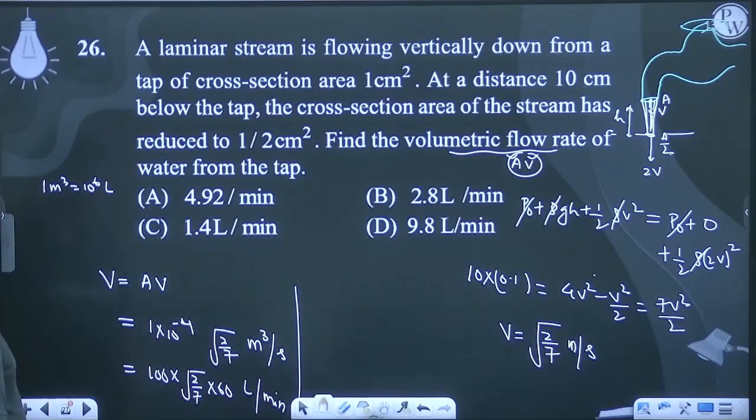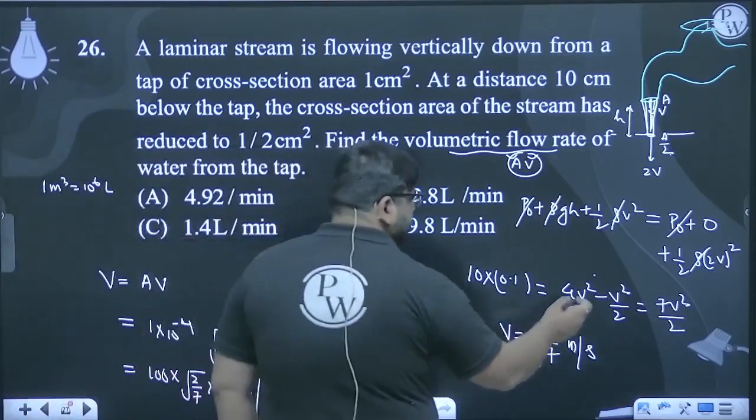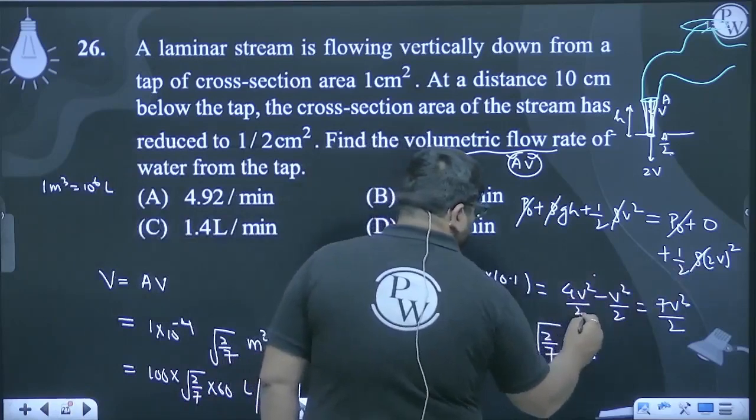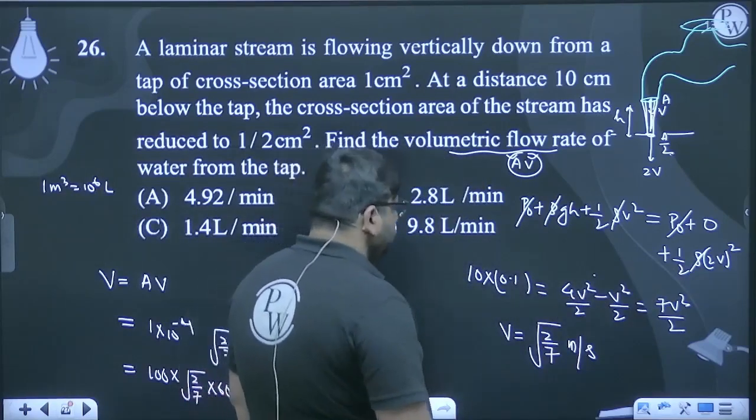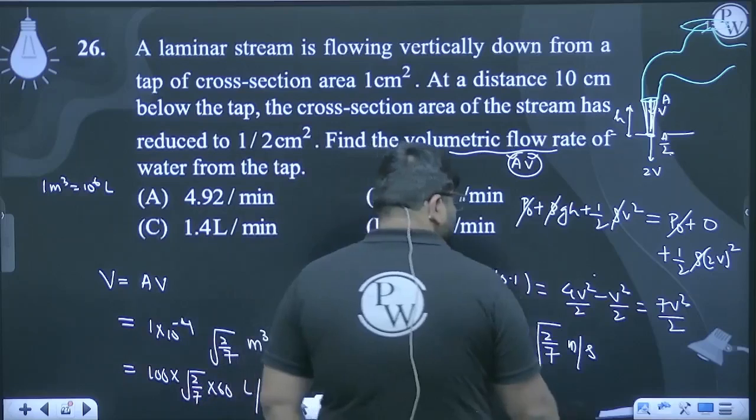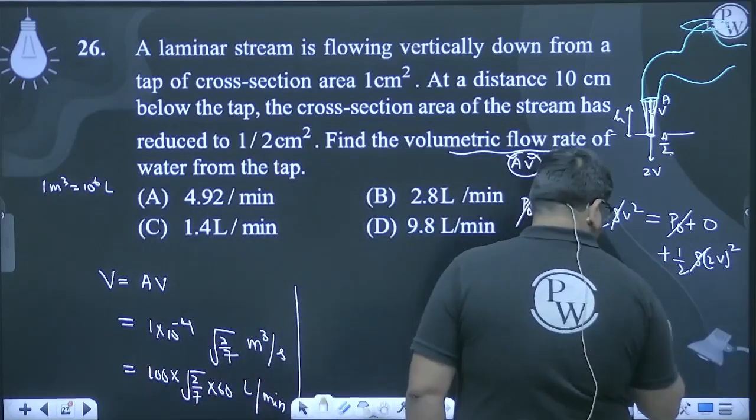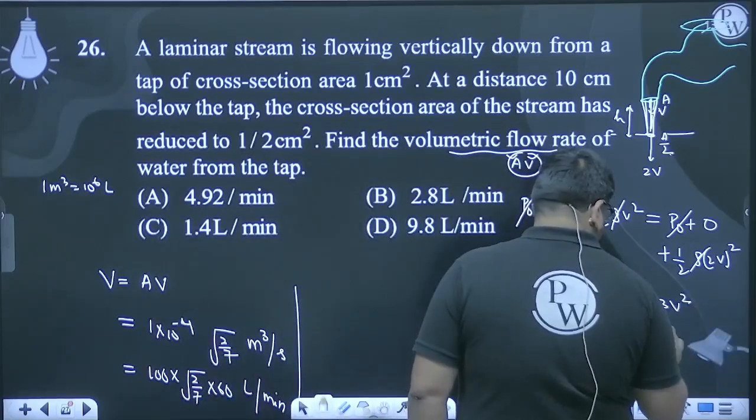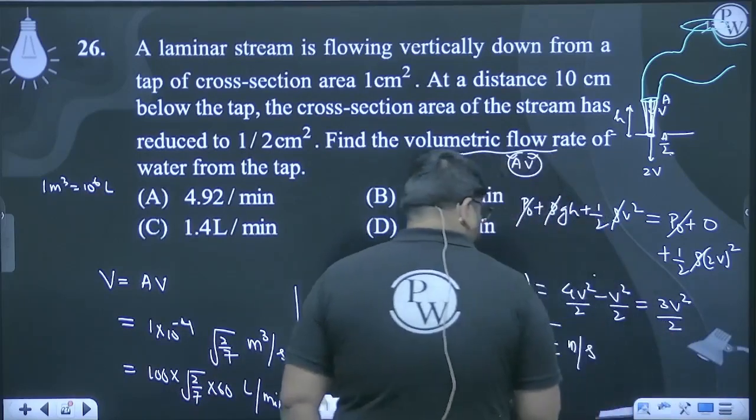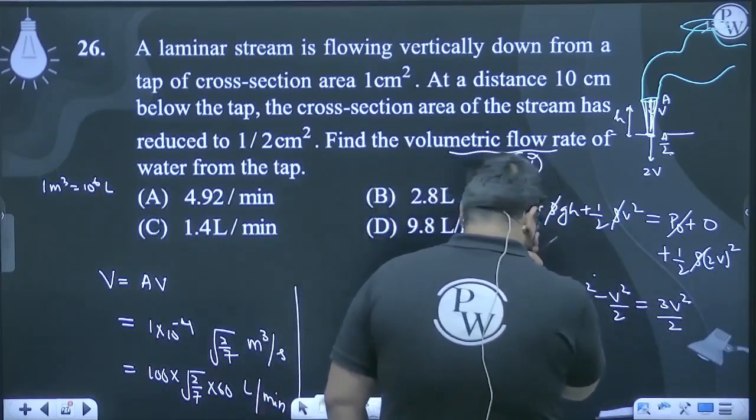Let me check the calculation. I've taken g value as 10, H value as 0.1 for 10 cm. See, I'm making a mistake - it's 4v²/2, so this will be 3v²/2.